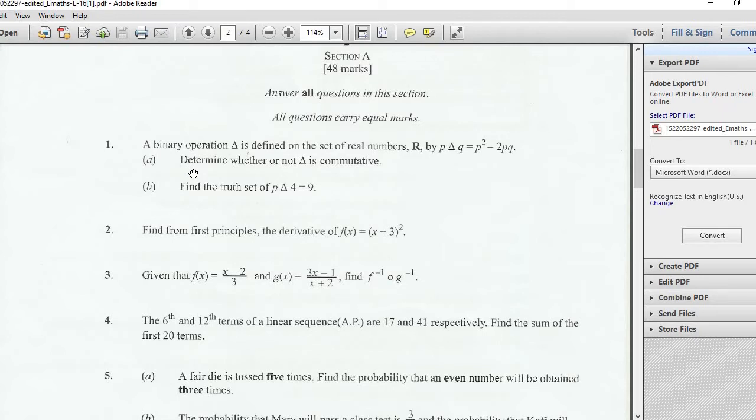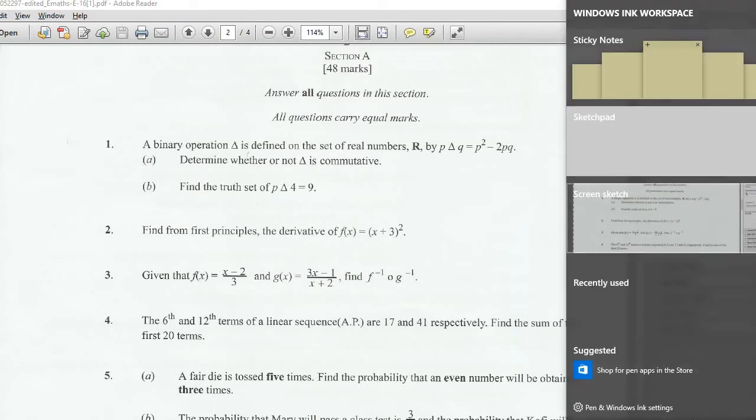Question number one says a binary operation Delta is defined on the set of real numbers R by P Delta Q equal to P squared minus 2PQ. (a) Determine whether or not Delta is commutative, and (b) find the truth set of P Delta 4 equal to 9. Let me open my workbook. So the question says P Delta Q is defined as P squared minus 2PQ.